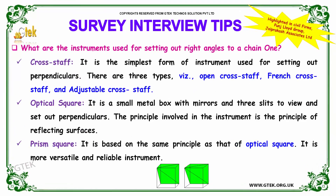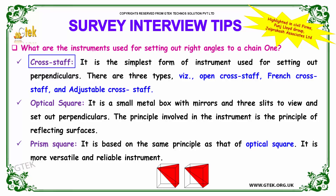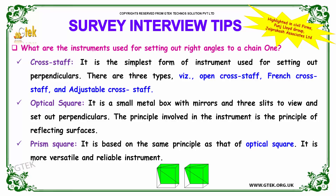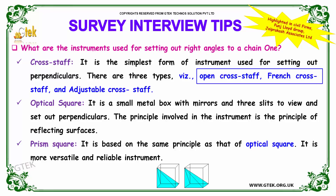Moving on to our next question: what are the instruments used for setting out right angles to a chain line? The instruments used are cross staff, optical square, and prism square. Cross staff is the simplest form of instrument used for setting out perpendiculars. There are three types of cross staff: open cross staff, French cross staff, and adjustable cross staff.